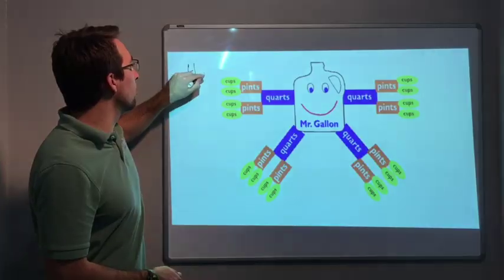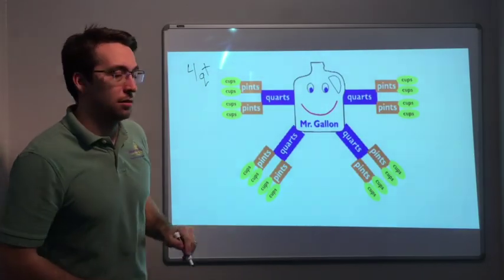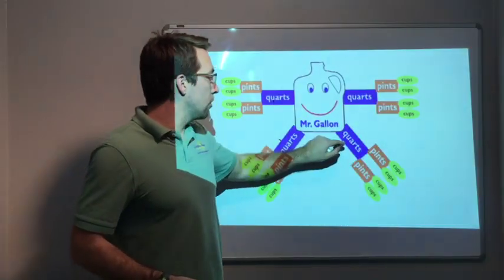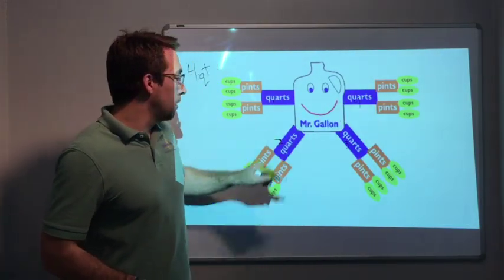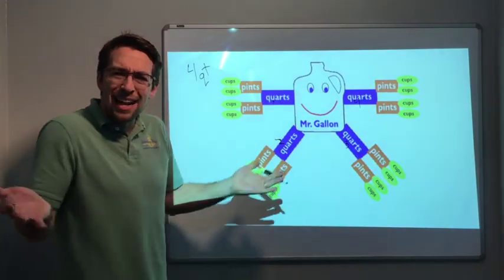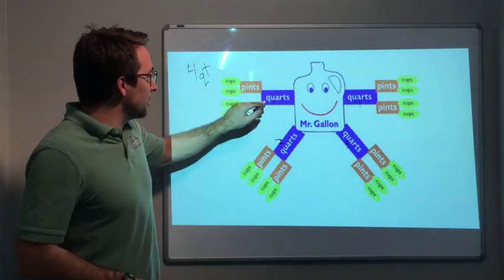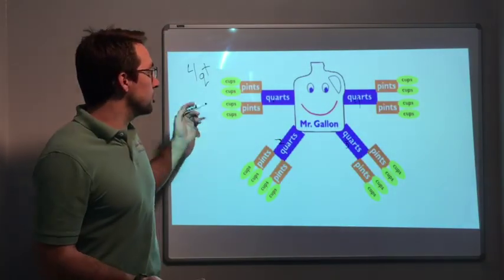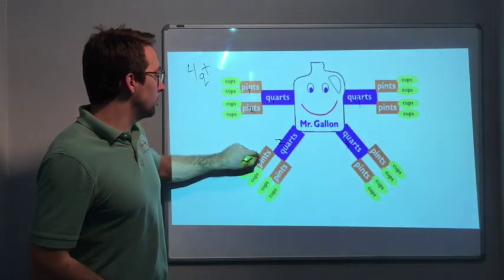Now how many pints equals one gallon? Oh, eight! Look, two comes out of each quart. So four times two is eight: one, two, three, four, five, six, seven, eight. So eight pints equals one gallon.